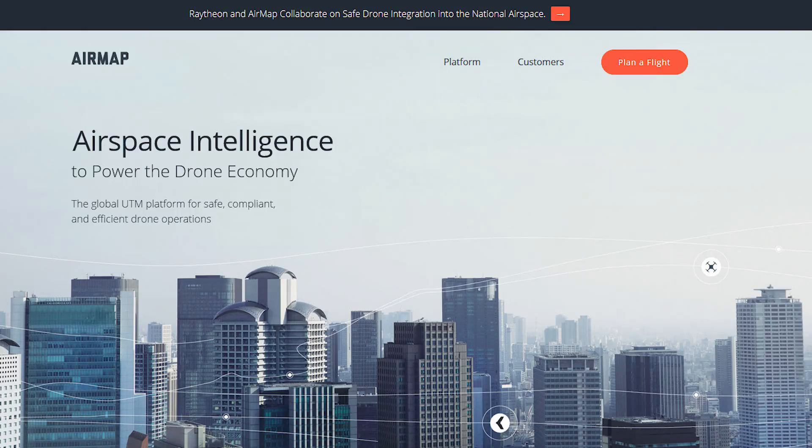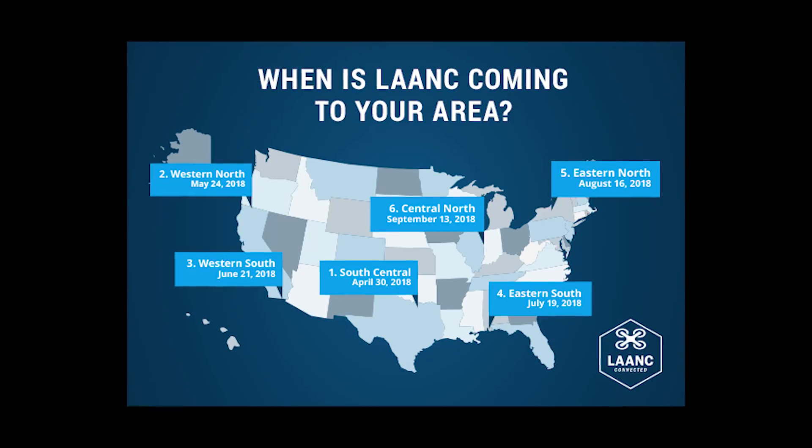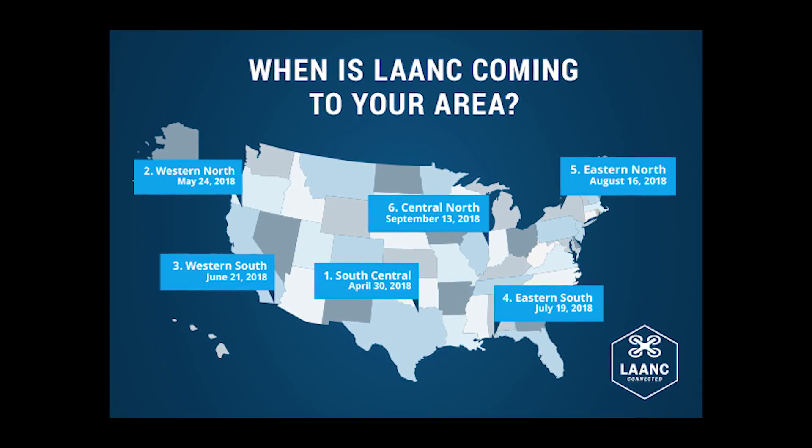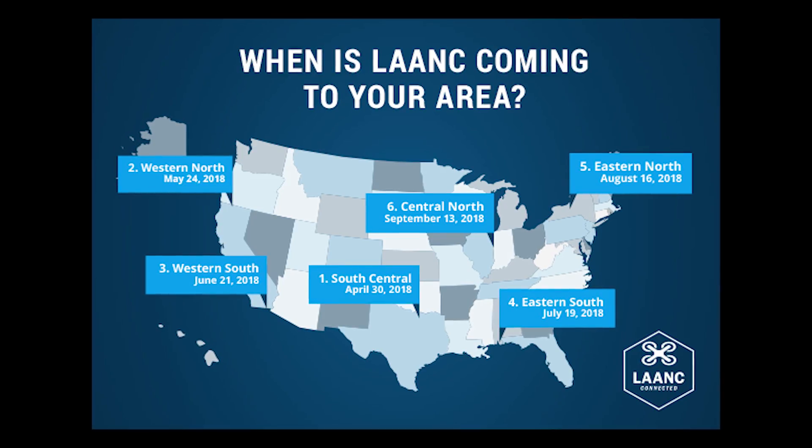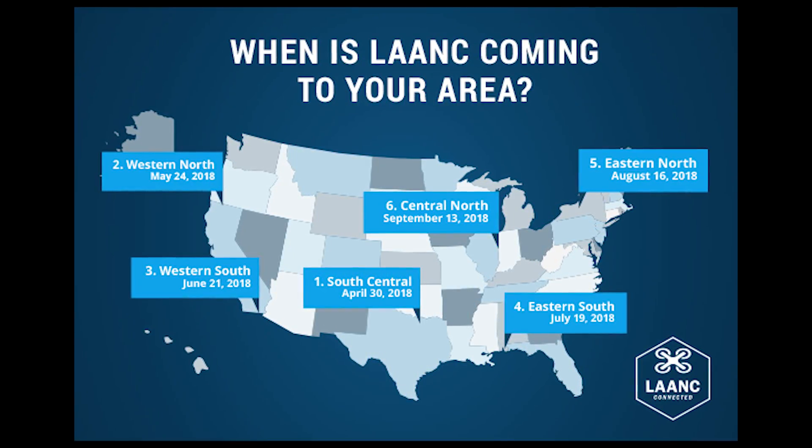There's a link to the AirMap app in the description. There's also a web-based version — the link to that is in the description as well. I hope this helps you be a safer pilot, a more responsible pilot. Now that you know how easy it is, go ahead and use it — that's what it's there for. Please don't call the tower anymore. That's why this system is put in place. The FAA does not want you to call the airport towers anymore when you're going to fly your drone. Thanks for watching. Thanks for subscribing. Until next time, bye.